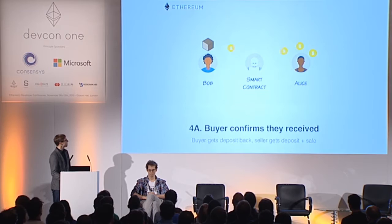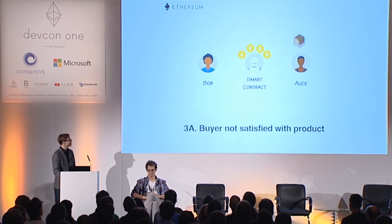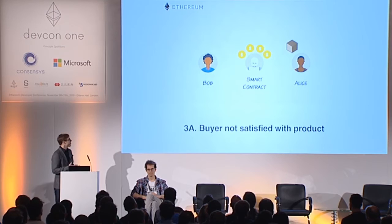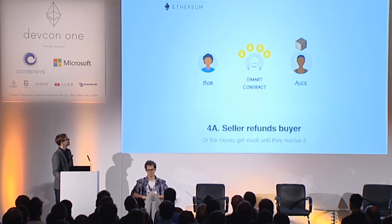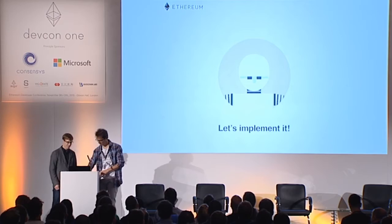By doing that, Bob has paid Alice and both got their deposits back. The other option is for Alice: if Bob says that's not the item I bought, or if something goes wrong, Alice can refund Bob — that's the only option for Alice. Then both get their deposits back. So that's the model; now let's try to implement that.